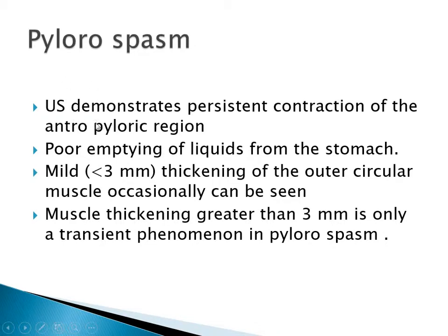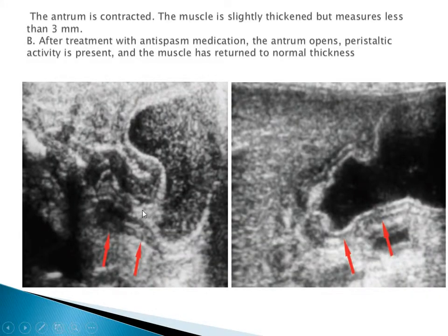Pylorospasm: on ultrasound, pylorospasm demonstrates persistent contraction of the anteropyloric region, poor emptying of liquid from the stomach, and mild thickening of the outer circular muscle. The muscle is normally 1.5 mm, but in this condition it is more than 1.5 mm and less than 3 mm - not stenosis. Muscle thickening greater than 3 mm is only a transient phenomenon in pylorospasm, and it is managed medically.